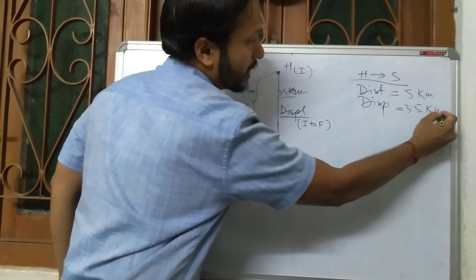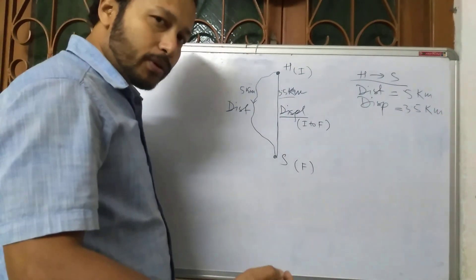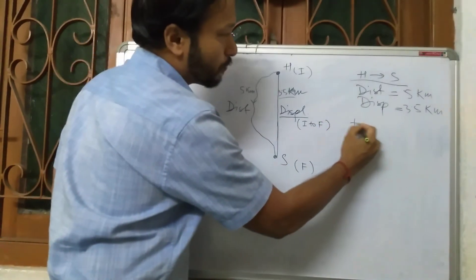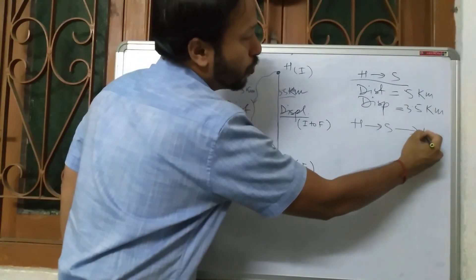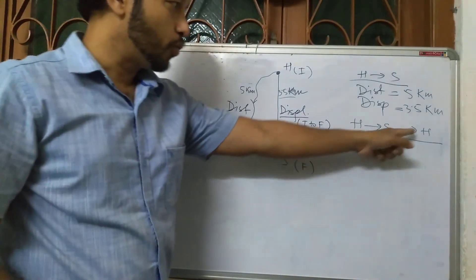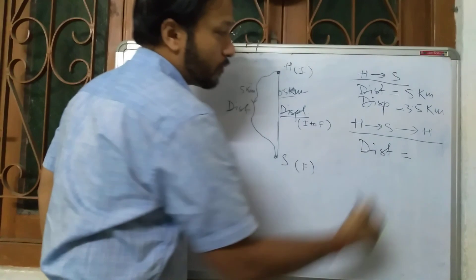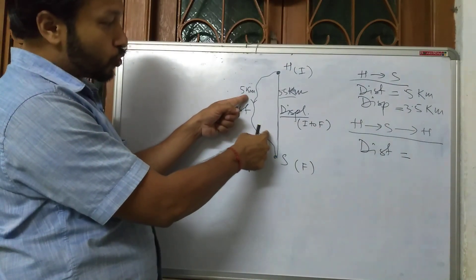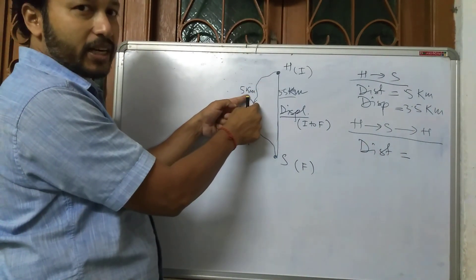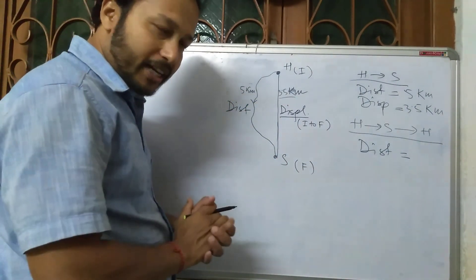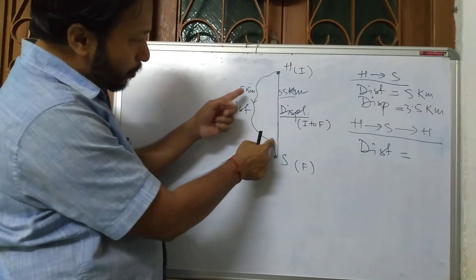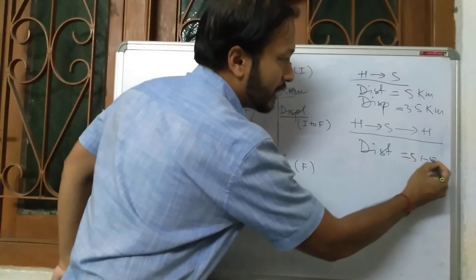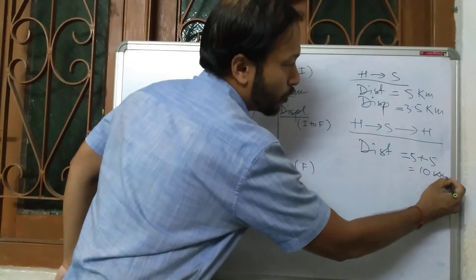Now say your school is over and you return home again — so home to school and then school to home. What is the total distance? From home to school it is 5 kilometers, and school to home is another 5 kilometers. So 5 plus 5 equals 10 kilometers — that is my total distance.